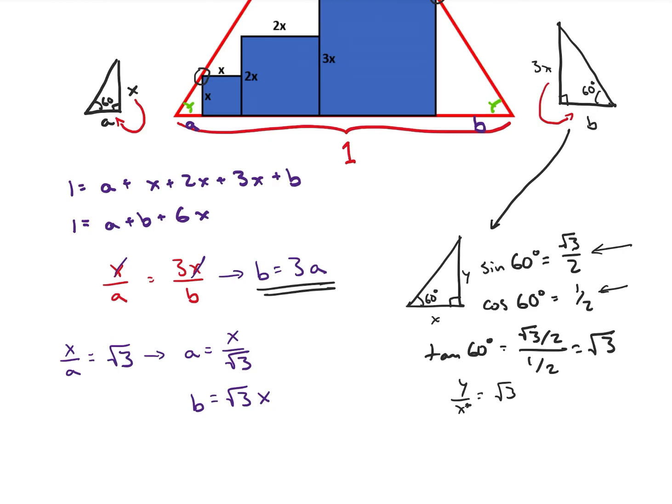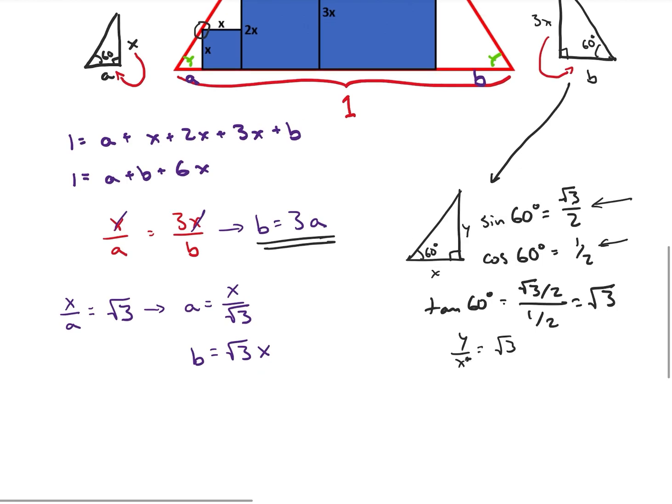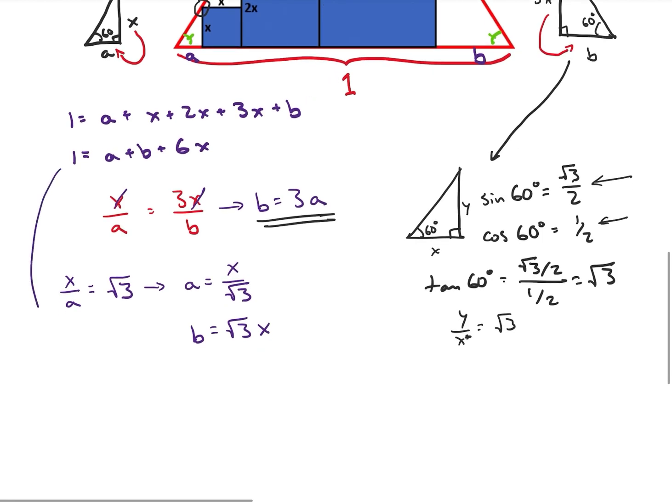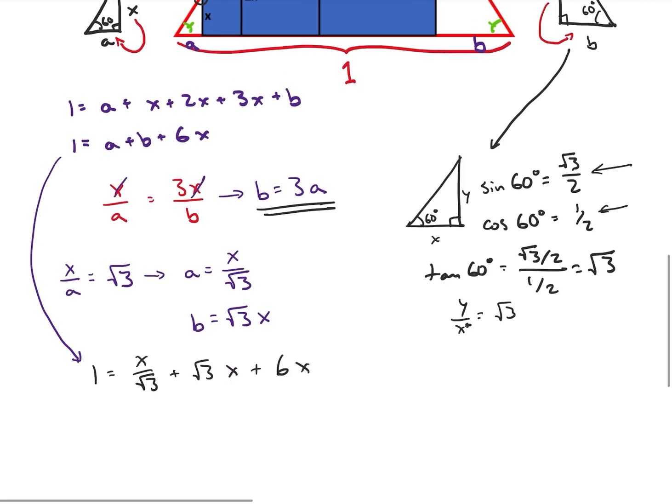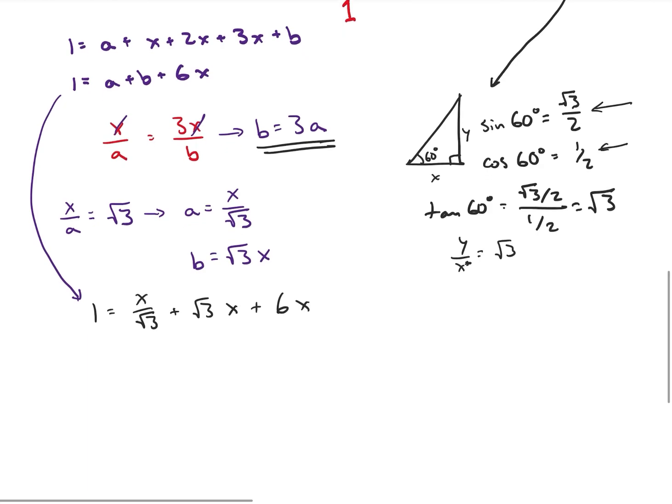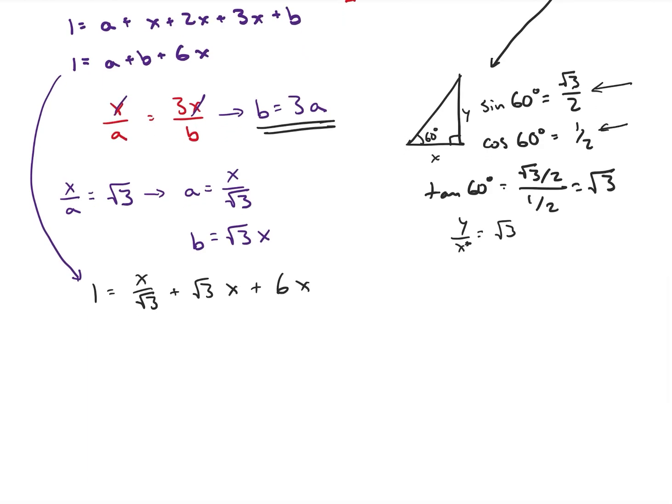Alright, so now we can go ahead and get some work done here. So let's look back at this equation right here. And now I have 1 is equal to x over the square root of 3 plus square root of 3 x plus 6 x. And we can combine things into a little bit better format here. And we'll notice here, so this is the same as root 3 x over 3.